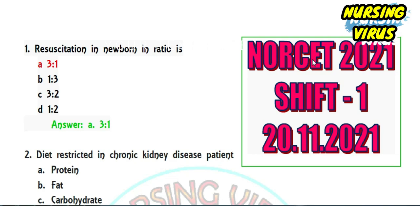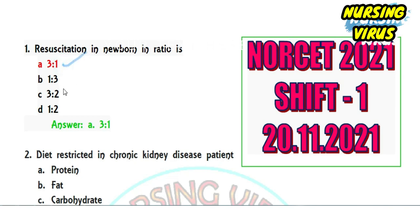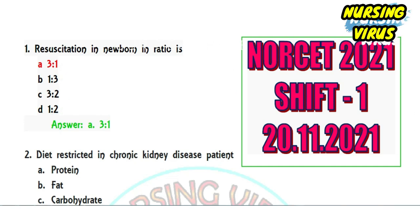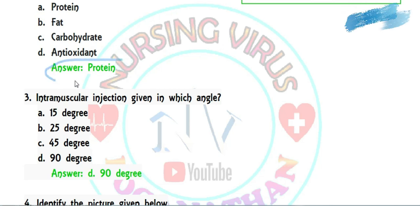The first question: resuscitation in the newborn — the ratio options are 3:1, 1:3, 3:2, and 1:2. The correct answer is 3:1, which is the correct ratio for newborn resuscitation. Question 2: the diet restricted in chronic kidney disease — options are protein, fat, carbohydrate, and antioxidant. The correct answer is protein; a protein-rich diet should be avoided in renal failure patients.